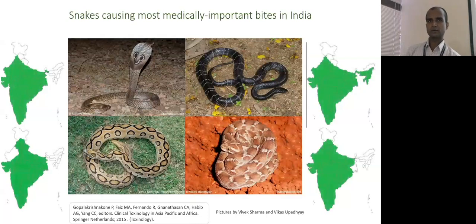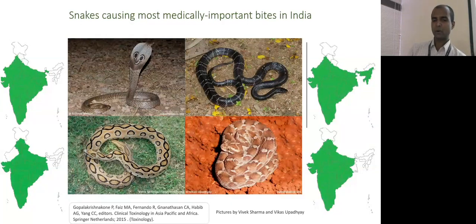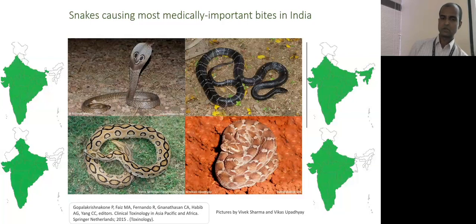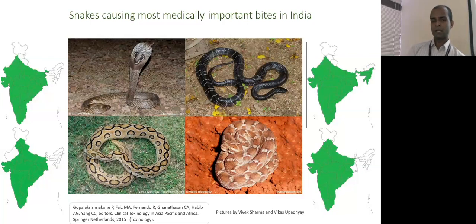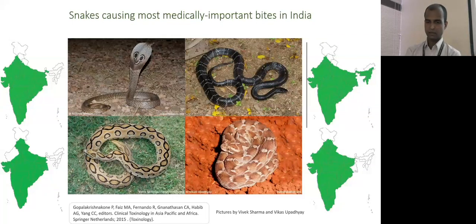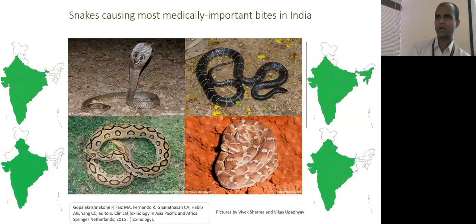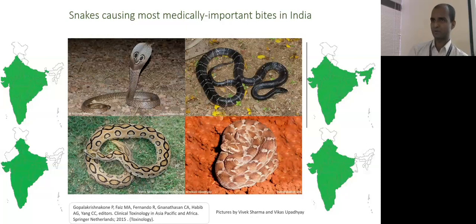The four common snakes, also called the Big Four, cause most medically important bites in India and are distributed across the country. The Indian Cobra (Naja naja) and Common Krait (Bungarus caeruleus) cause neuro paralysis. Russell's Viper (Daboia russelii) and Saw-scaled Viper (Echis carinatus) are also part of the Big Four. Cobra and Krait predominantly cause neurotoxic envenomation, more common in North India, while Russell's Viper is most common in South India.